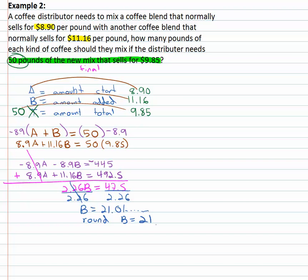And in real life the numbers aren't going to always come out nice, so it's okay to round to get twenty one. We also know that A plus B has to add up to fifty, so A plus twenty one has to add up to fifty. Subtracting twenty one from both sides and we get A is equal to twenty nine.